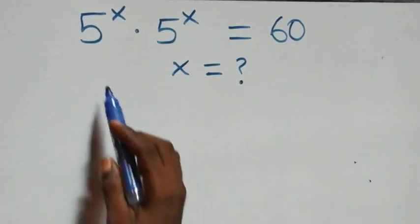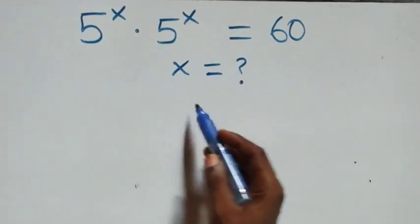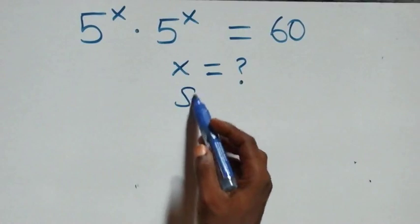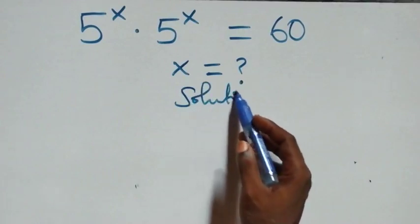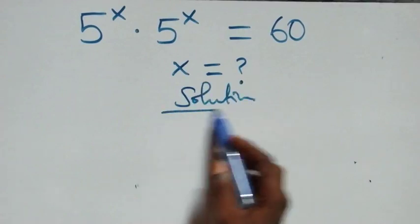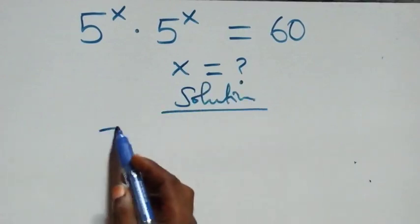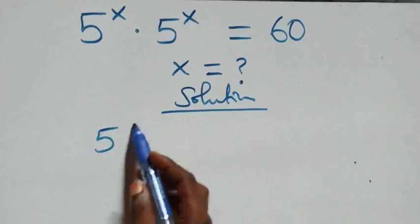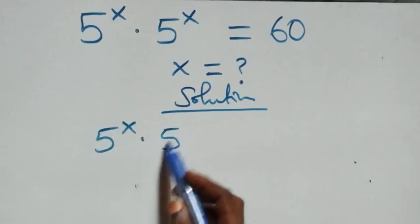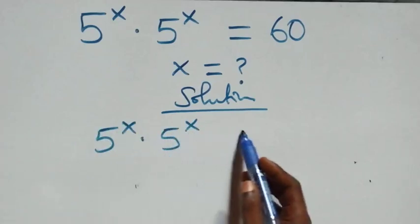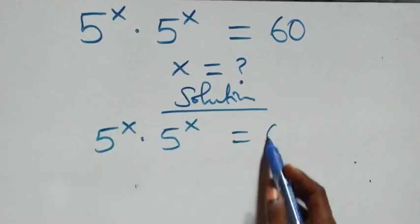How to solve this nice exponential equation. From what we have here, which is 5 raised to power x times 5 raised to power x equals 60.